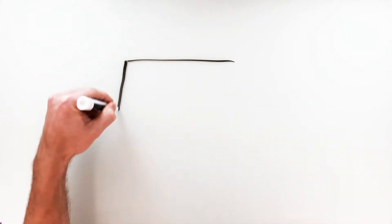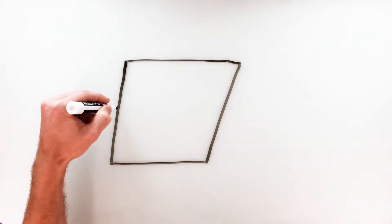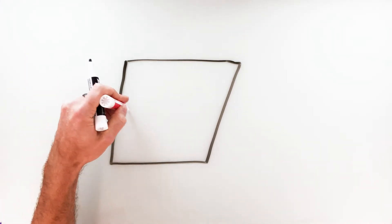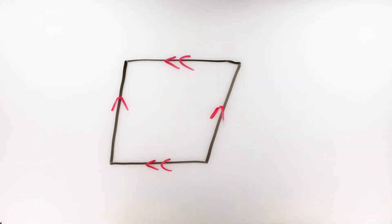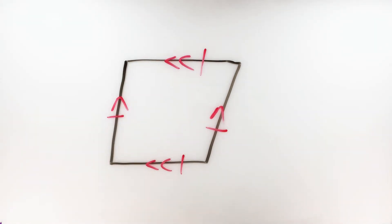Now we're going to focus specifically on the rhombus and the rectangle. So let's start with the rhombus. The definition of a rhombus is a parallelogram with four congruent sides — a parallelogram meaning it has both pairs of opposite sides parallel to each other. Note that a rhombus does include a square, so a square is technically a rhombus because it's a parallelogram with four congruent sides. These properties also apply to squares as well.